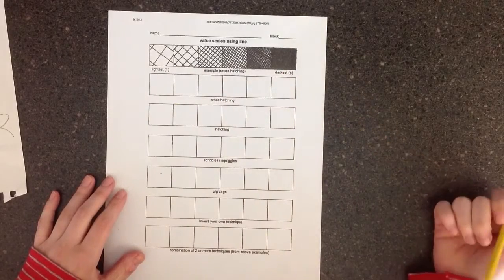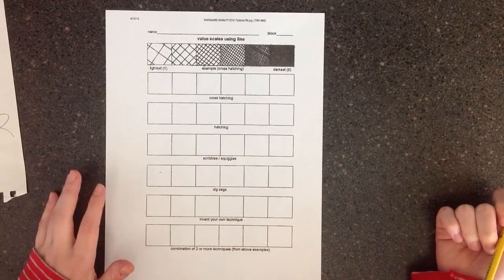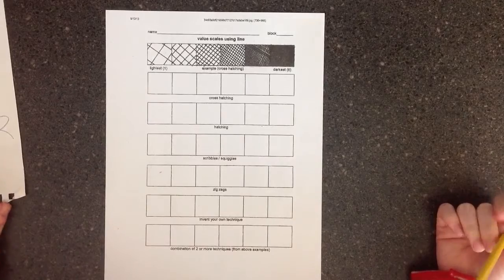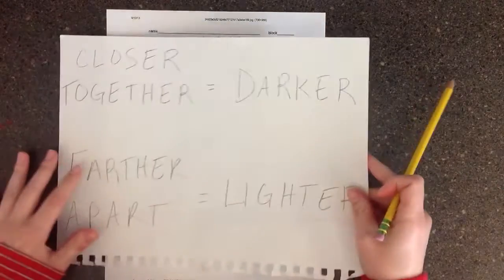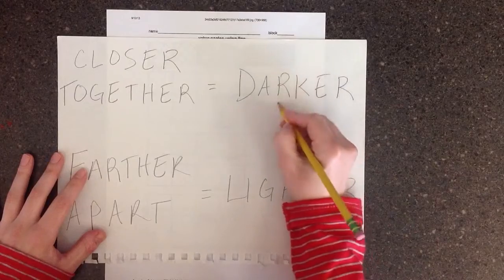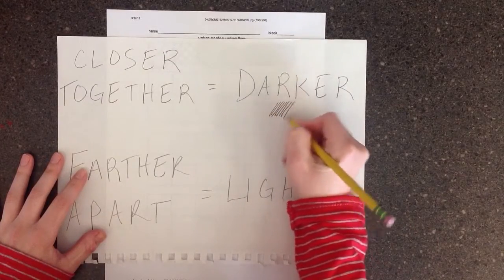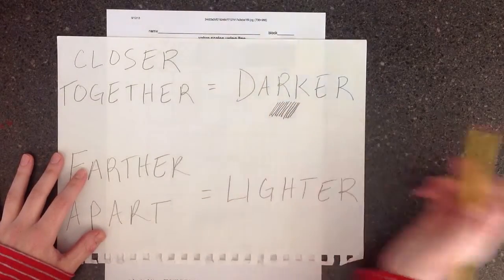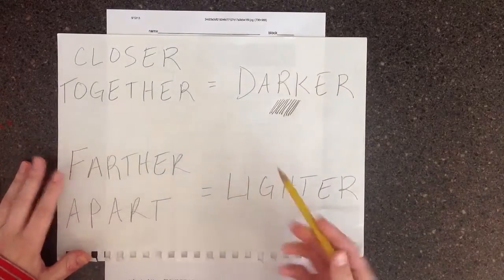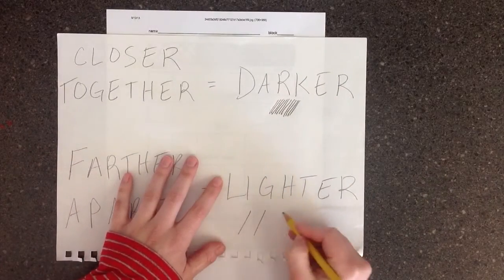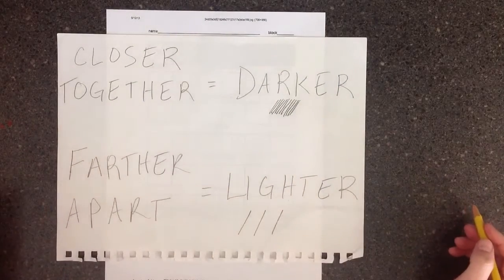The thing to remember about creating values when you're only using lines is that the closer together the lines are, the darker the value will be. So if the lines are close together, it'll be darker. And the farther apart the lines are, the lighter the value will seem.